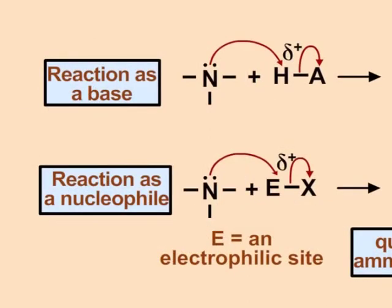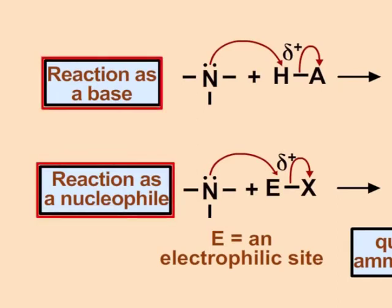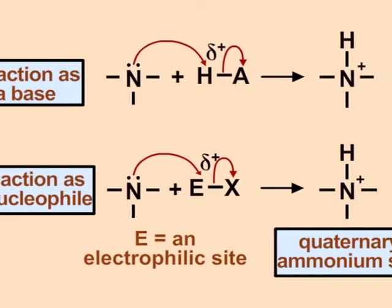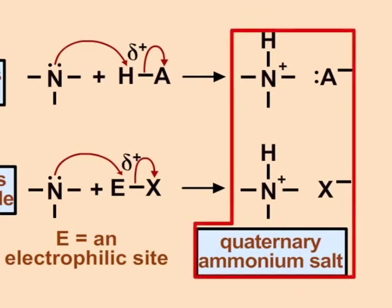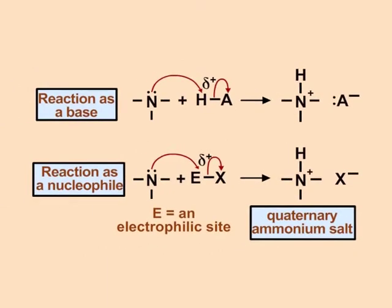Like ammonia, amines have nitrogen with lone pairs of electrons, and as a result their chemical properties resemble those of ammonia. The tendency of nitrogen to share this pair of electrons underlies the entire chemical behaviour of amines — their basicity and their action as nucleophiles. Amines act both as a base and as a nucleophile; in both cases quaternary ammonium salts are formed. The non-bonding electron pair makes an amine both a base and a nucleophile.